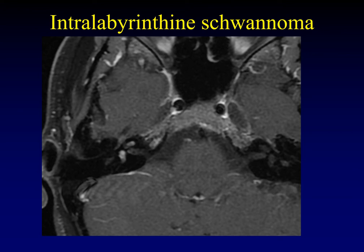Since we're talking about labyrinthitis, it seems like an opportune time to discuss a rare entity called an intralabyrinthine schwannoma. Most schwannomas that affect the labyrinth have a component in the internal auditory canal with a waist at the cochlear aperture, giving a classic dumbbell appearance. But sometimes you see enhancement exclusively within the labyrinth itself. It may be very difficult to know whether you're dealing with acute labyrinthitis or a schwannoma — often you just have to follow it over time and see whether it enlarges, as a schwannoma would, or goes away, as labyrinthitis would.